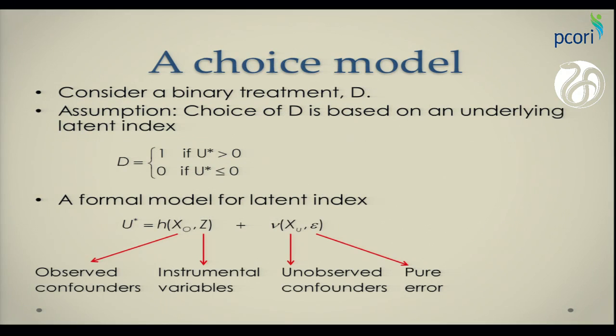Many of you may have seen this. Usually when we model choice, suppose we are considering a binary treatment D, and the choice of D is based on some underlying latent index U star. So if U star is greater than zero, which is an arbitrary threshold, we assume that D equals one if these people choose to get treatment. And if U star is less than zero, people do not get treatment.